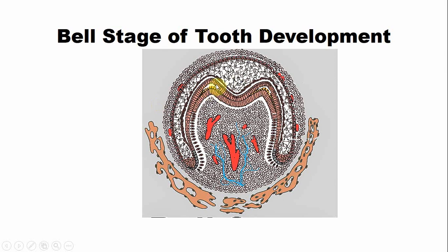Dentine formation begins at the tip of the cusp tips or the incisal edges, and then the odontoblasts start differentiating. These are the fully differentiated odontoblasts, and these are the new odontoblasts that are differentiating. The odontoblasts require a rich blood supply and are supplied by these blood vessels. This junction is known as the zone of reflection or cervical loop, and this area helps in root formation by the formation of Hertwig epithelial root sheath.